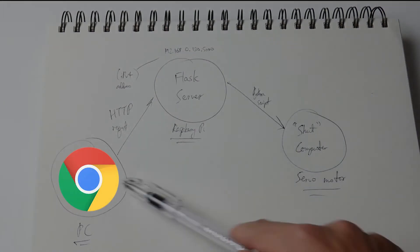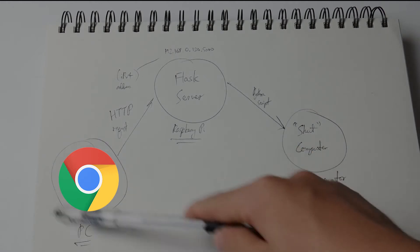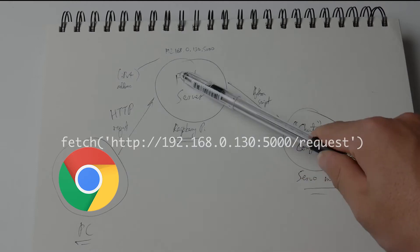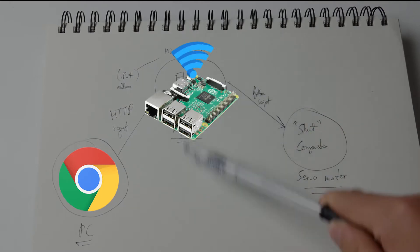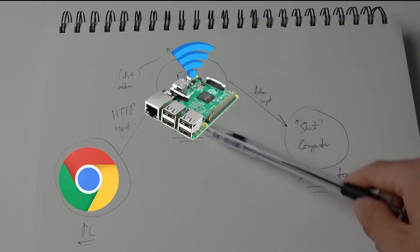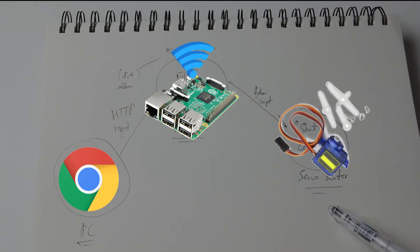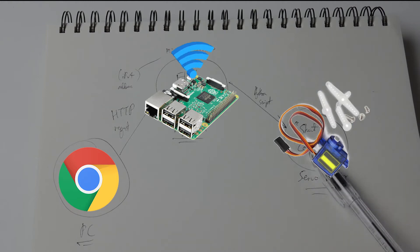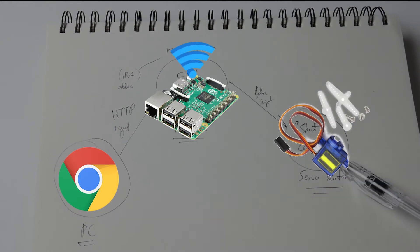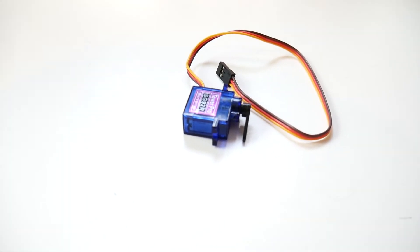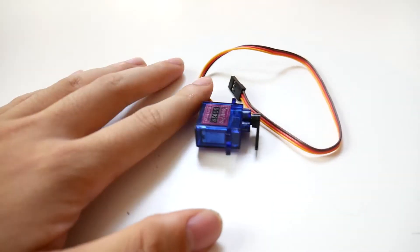I made this diagram to explain how the whole thing works — but really it's to make the whole thing look more complicated than it actually is. We got the Chrome extension running on my PC, and whenever it detects that I go onto an unsolicited website, it's going to send an HTTP request to a local server on my Raspberry Pi. When it receives a request, it's going to run a Python script that turns on the servo motor and shuts down my computer.